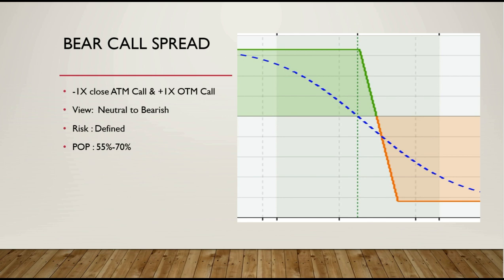We call it out of the money. We call it delta — neutral to bearish. The risk is defined because we call it a hedge — a predefined strategy. The probability of profit is dollar to bearish. According to market conditions, we are going to manage the margin. We need a hedge strategy in order to manage the market. I will refer you to the next video.